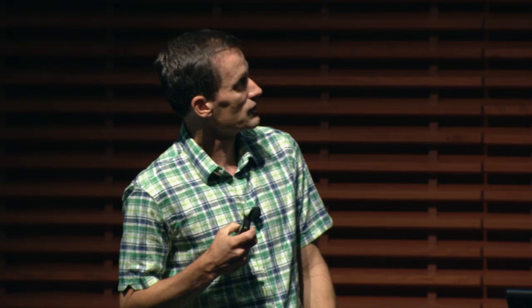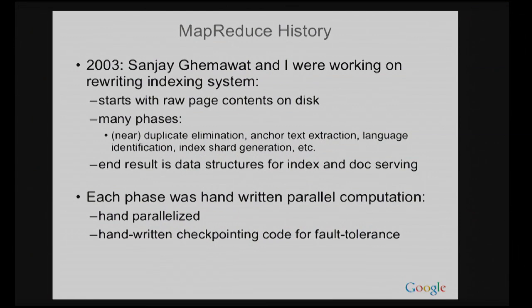Once we had a file system that could reliably store data, we obviously wanted to do stuff with it. In the context of our indexing system, we had a whole bunch of different phases, starting with raw pages on disk and eventually ending up with inverted index data structures — eight or ten phases were needed to go from raw pages to the eventual data structure. Each one of these phases at the time was a hand-written parallel computation where we would decide how many machines to use and hand-write checkpointing code for each phase to save important state. That was painful. A lot of the computations were actually quite simple — you could express some of these phases, the actual core algorithms were maybe 100 lines of code — but it became very clouded by all this fault tolerance and checkpointing code wrapped around it, so you could barely even find the actual nugget of cool stuff in there.